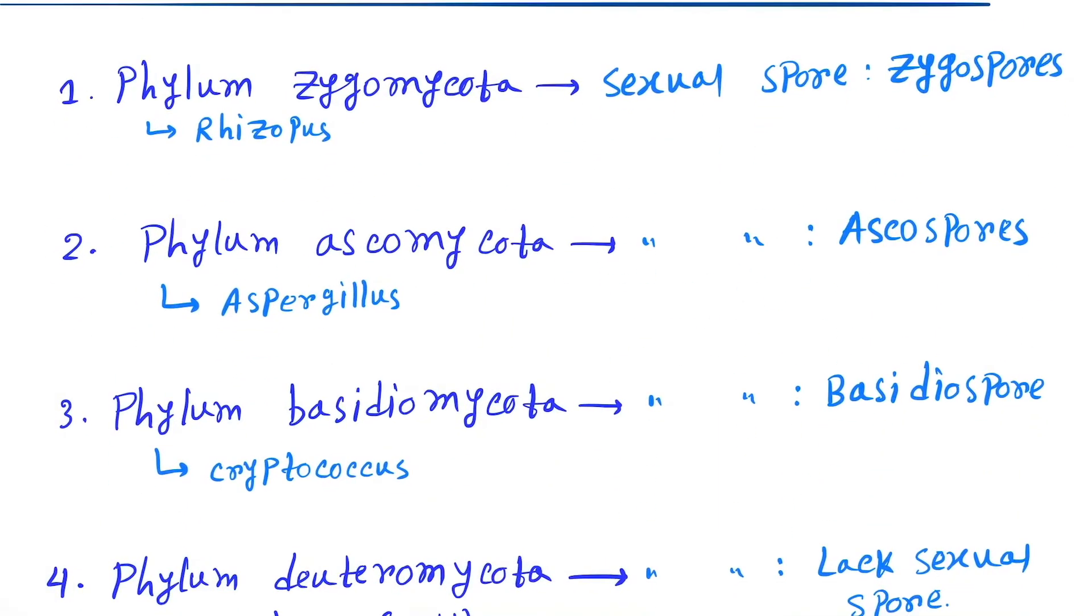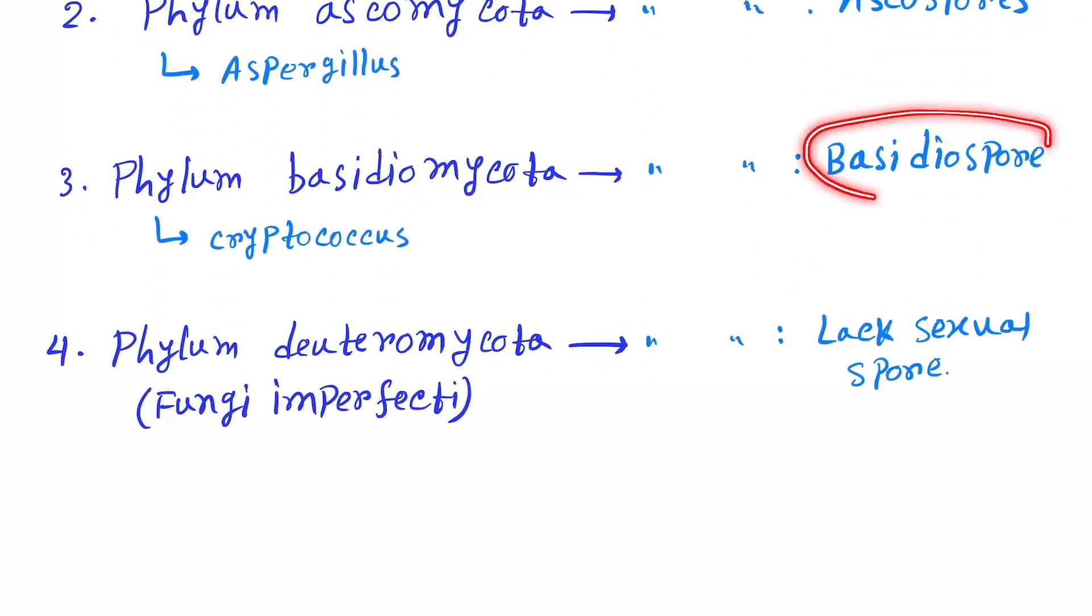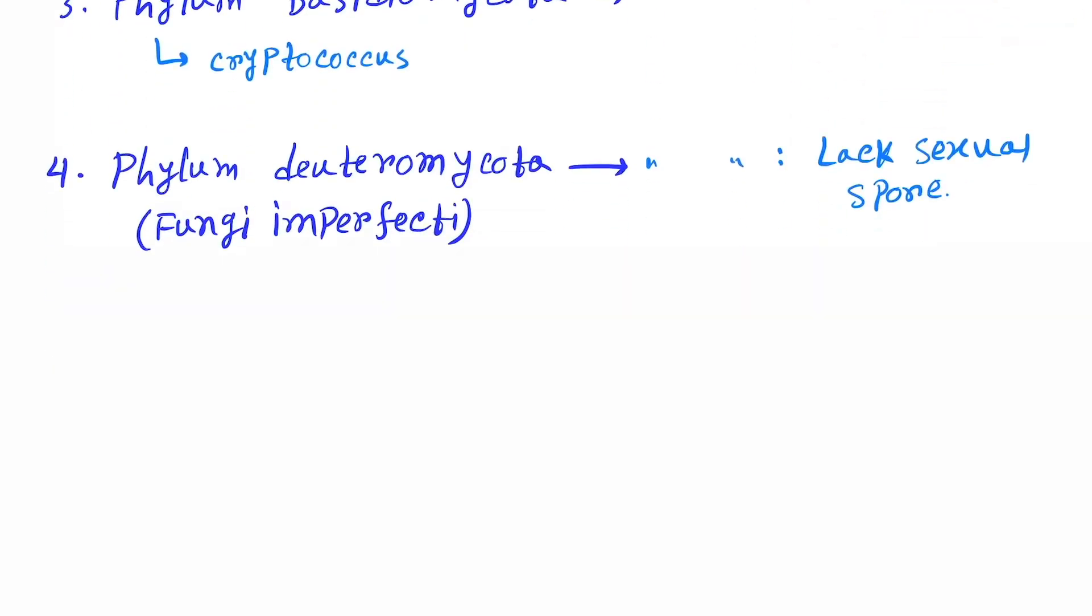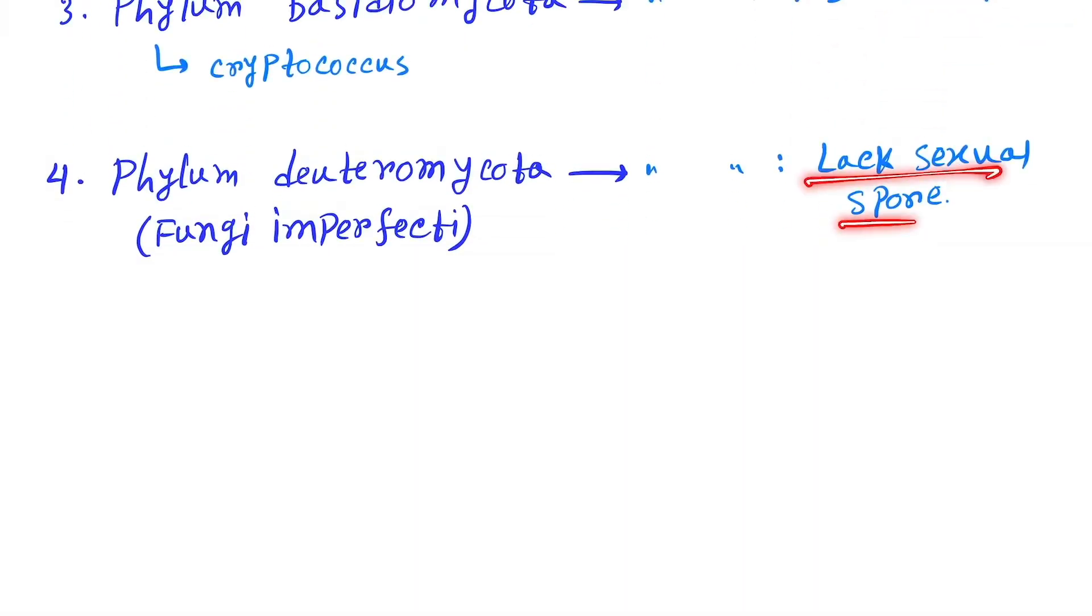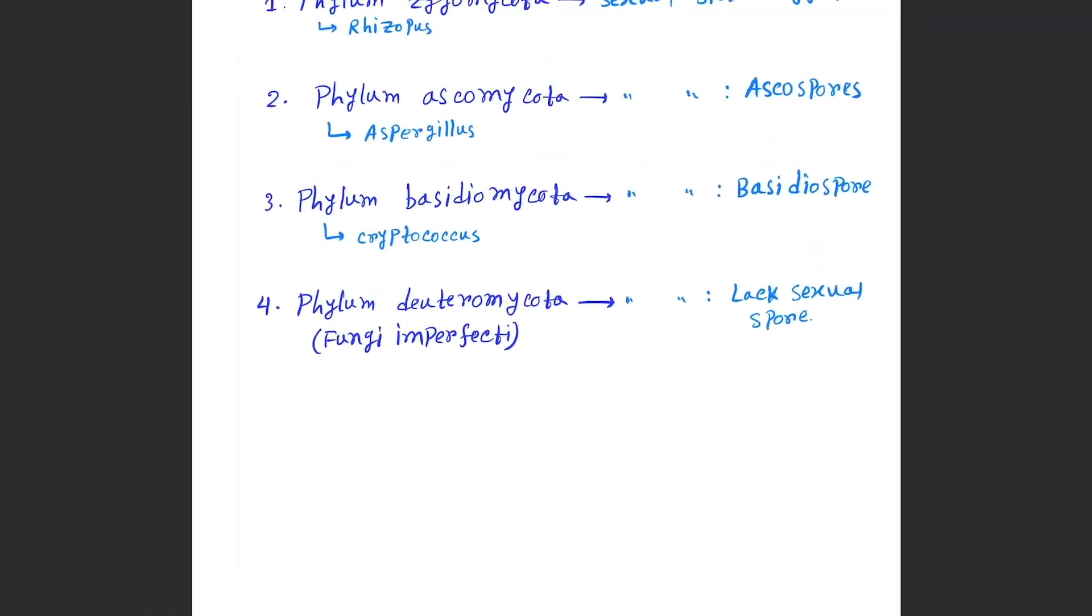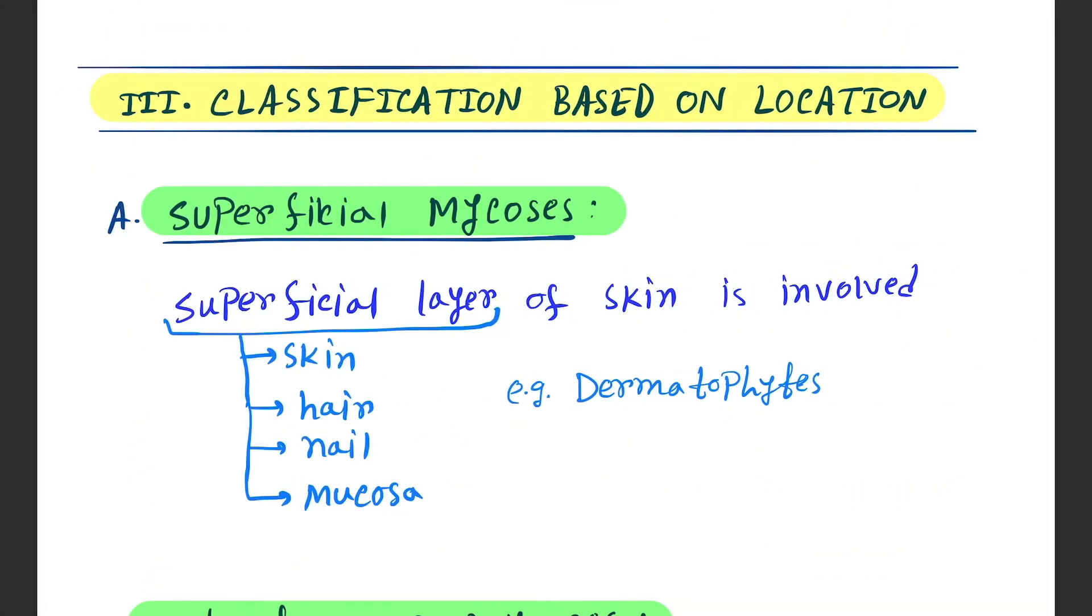Ascomycota - their sexual spore is ascospores. Basidiomycota - their sexual spore is basidiospores. And Deuteromycota - they lack sexual spores, so it is also called Fungi Imperfecti. This is the taxonomical classification.